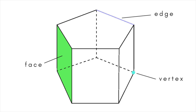Sometimes the term polyhedron is used to apply to figures in more than three dimensions, although analogues of polyhedrons in the fourth dimension or higher are also referred to as polytopes.